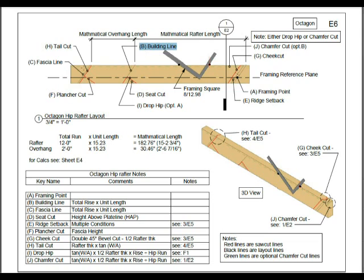From your building line to your fascia line, that's your overhang. Total run is 2 feet times your unit length of 15.23, giving a mathematical length of 2 feet 6 and 7 sixteenths.